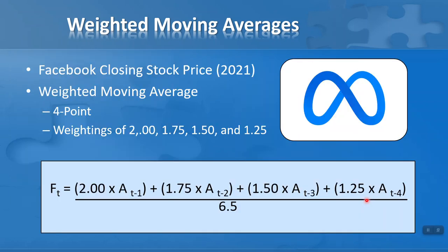Now let's look at more elaborate data. I'll use Facebook closing stock downloaded from Yahoo Finance for the year 2021, and apply a four-point weighted moving average. My weightings are: two for t-minus-one (most recent), 1.75 for t-minus-two, 1.50 for t-minus-three, and 1.25 for t-minus-four. We give higher weighting to the most recent time periods. Adding up the weightings gives 6.5, which is what we divide the result by.